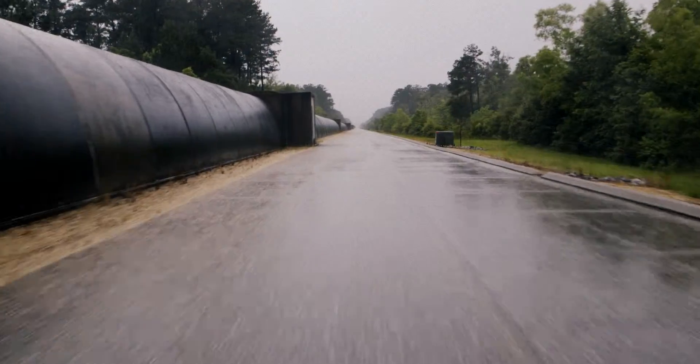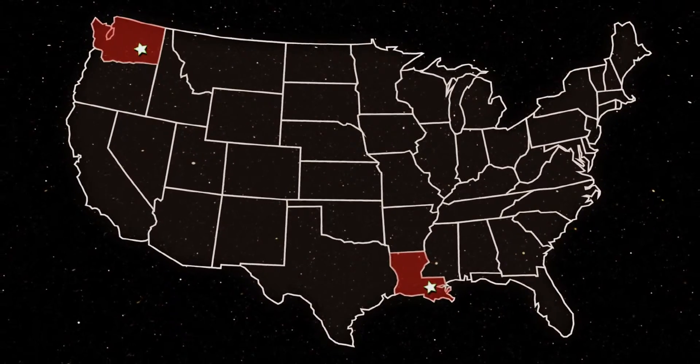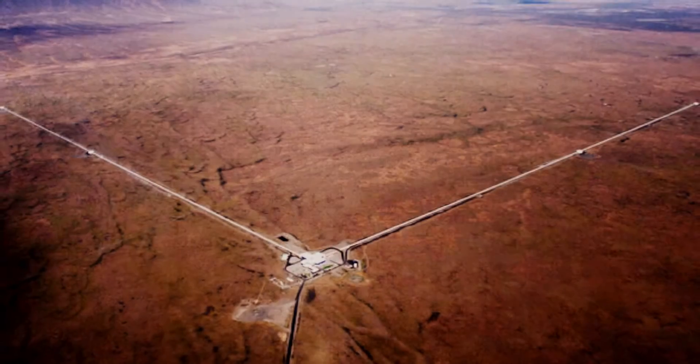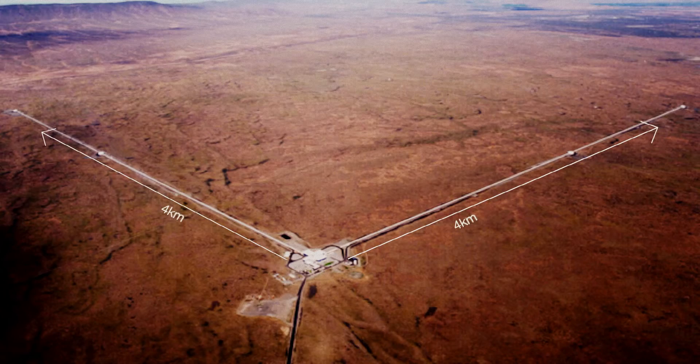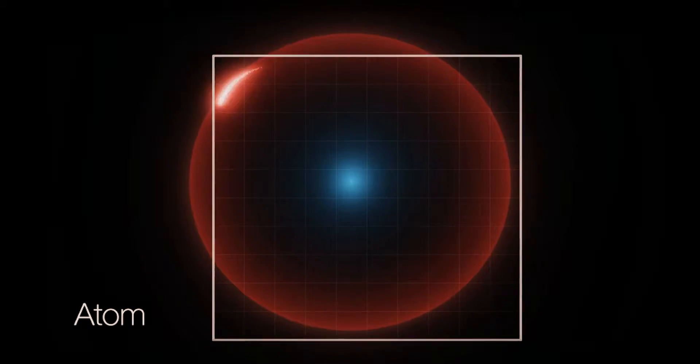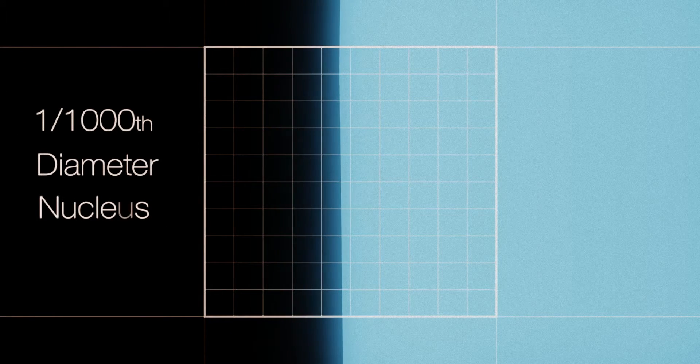We have interferometers — one in Hanford, Washington, one in Livingston, Louisiana — to detect the stretching and compressing of space. We literally look for changes in the space-time distance in our instruments as the gravitational wave goes by. And the gravitational wave pushes them together and apart by one one-thousandth the diameter of the nucleus of an atom. No wonder it's taken so long to pull this off.